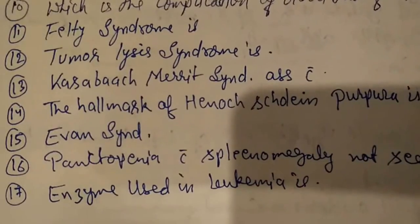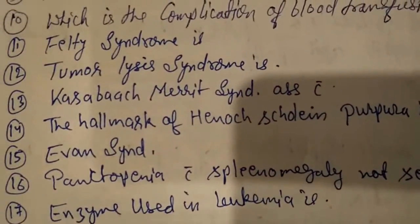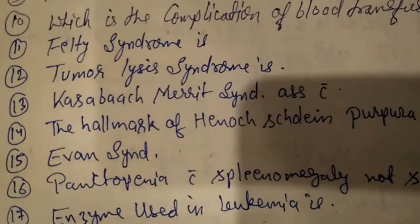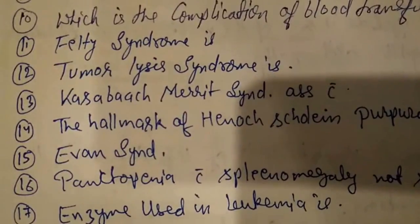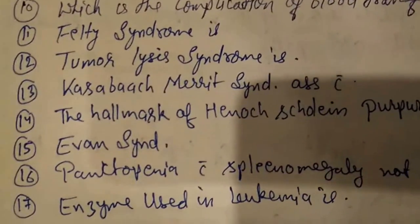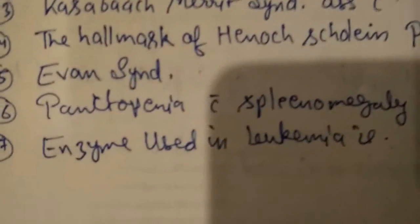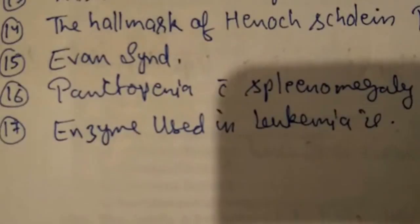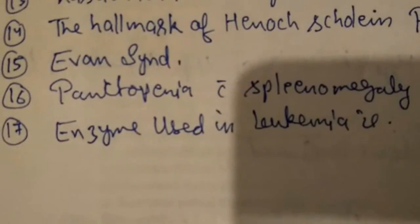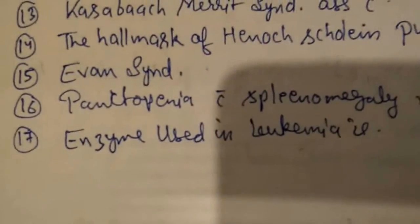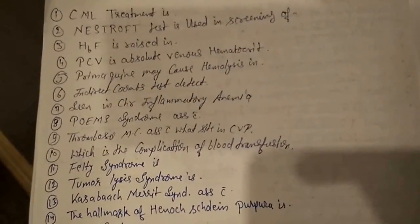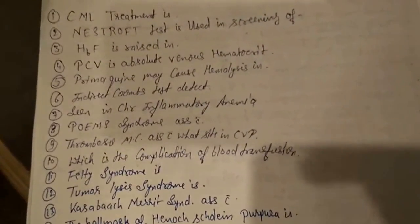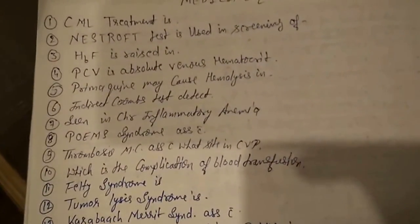Sixteenth question: pancytopenia with splenomegaly is not seen in aplastic anemia. In aplastic anemia there is pancytopenia but no splenomegaly. Seventeenth question: the enzyme used in leukemia is asparaginase — A-S-P-A-R-G-I-N-A-S-E.